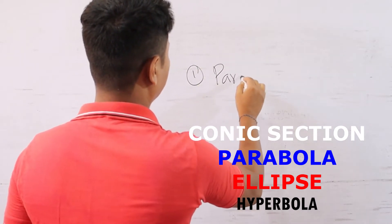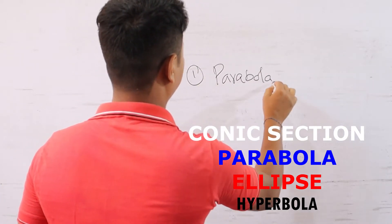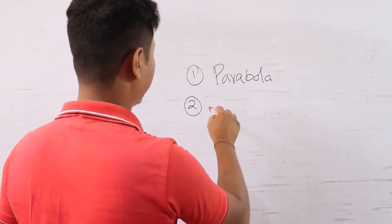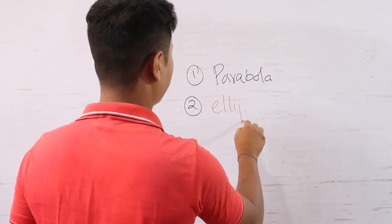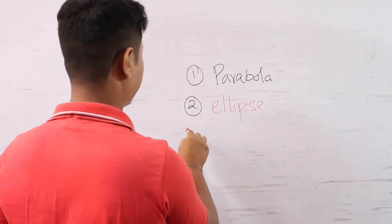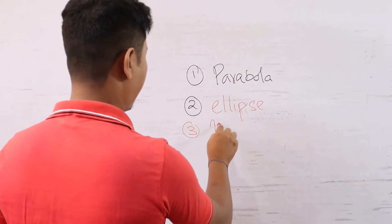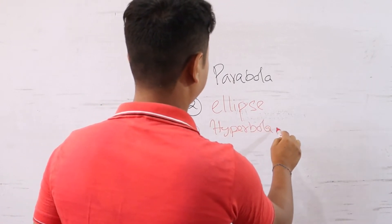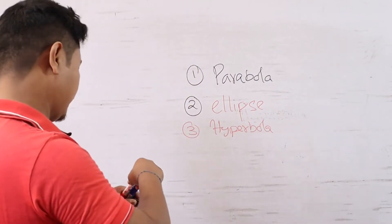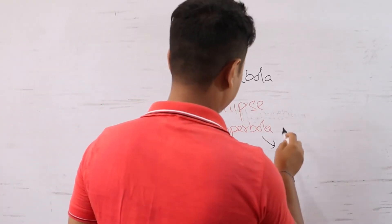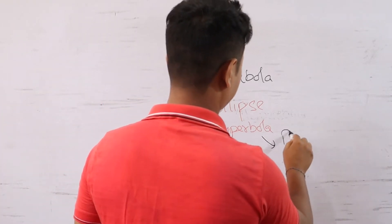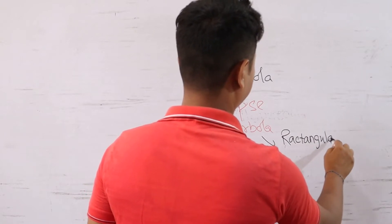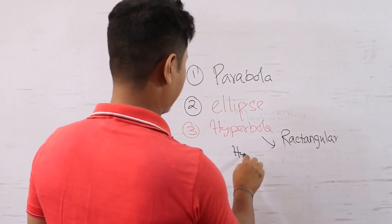The conic sections we will cover are: first, parabola; second, ellipse; third, hyperbola; and fourth, rectangular hyperbola. We have separate videos for each of these topics.